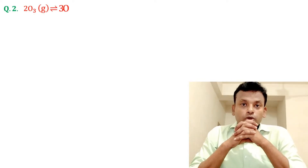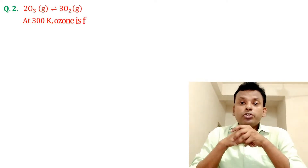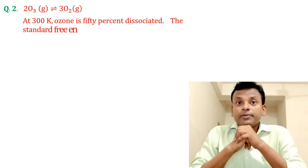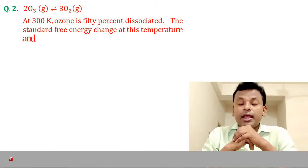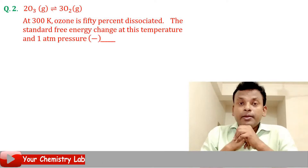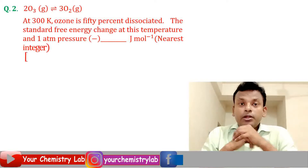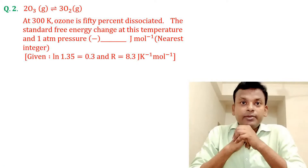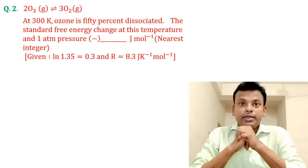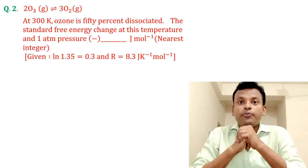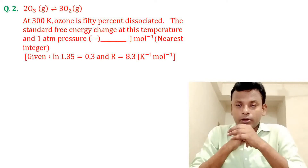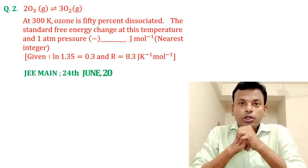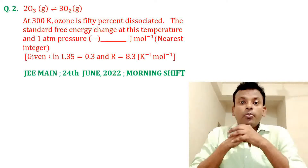Question two: 2O3 gives 3O2. At 300 Kelvin, ozone is 50 percent dissociated and the standard free energy change at this temperature and one atmosphere pressure is blank joules per mole (nearest integer). Given: ln(1.35) = 0.3 and R = 8.3 joules per Kelvin per mole. This question was set in JEE Main 24th June 2022 morning shift.